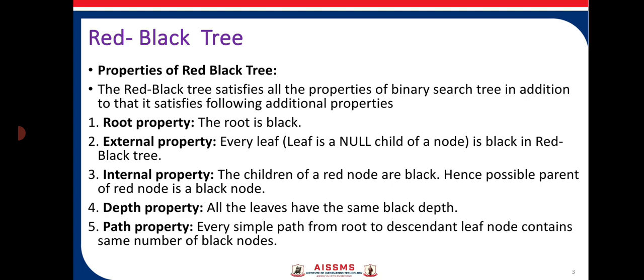The Red-Black Tree satisfies all the properties of a binary search tree — it has at most two children, keeps the smallest element to the left of the root and the largest to the right. Along with BST properties, it has additional properties. The root property states that the root of the Red-Black Tree is always black, so whenever we generate a Red-Black Tree we consider the root colored as black.